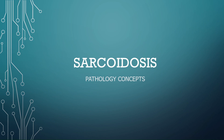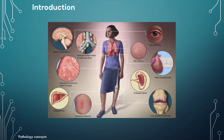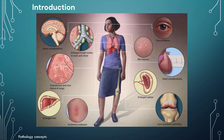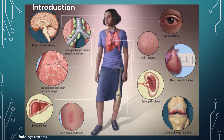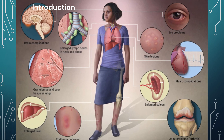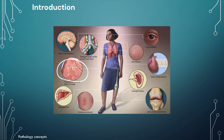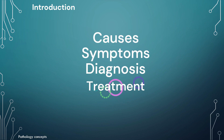Hello and welcome everyone. Today our topic of discussion is sarcoidosis. Sarcoidosis is a multi-system granulomatous disease with non-specific clinical manifestations that commonly affects pulmonary systems and other organs including eyes, skin, liver, spleen, and lymph nodes. However, it most often starts in the lungs and lymph nodes. Let's see its causes, symptoms, diagnosis, treatment, and management.